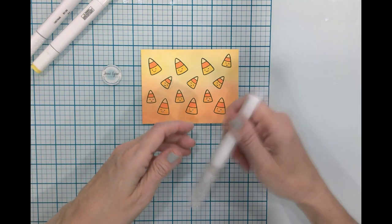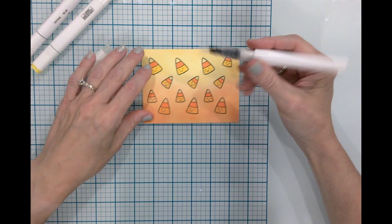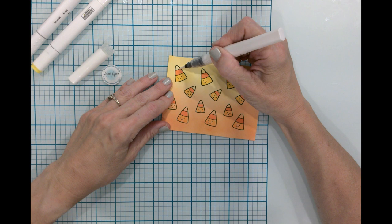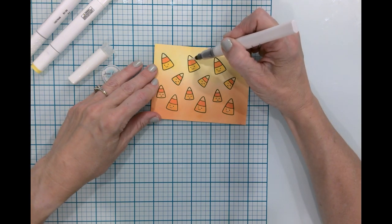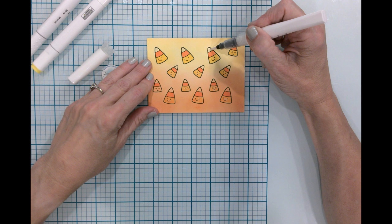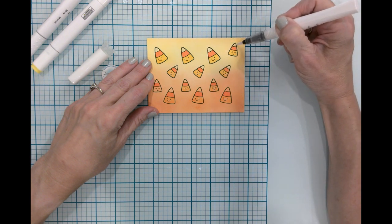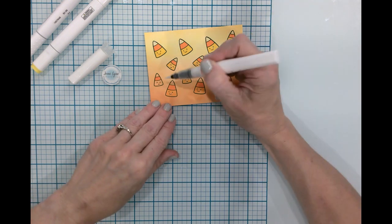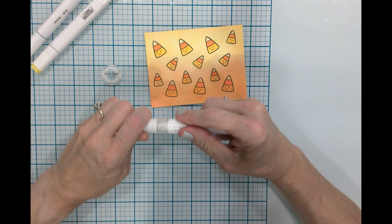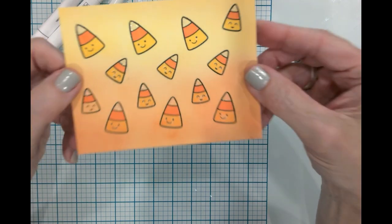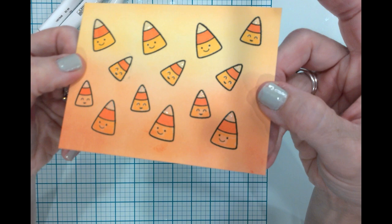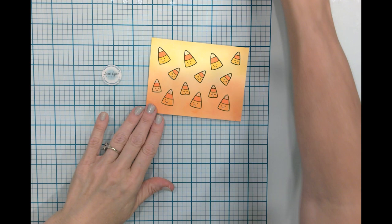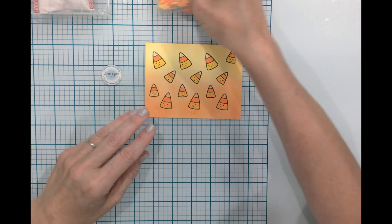So the next thing I'm going to do is I'm going to take my clear shimmer pen and I really just want to put it right where the white of the candy corn would be. I absolutely love this little shimmer pen. This is beyond fun. It's just adding a little bit of sparkle. And then now you can see the little sparkle and shine.